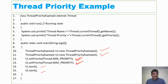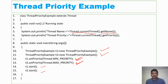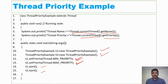Once threads have been started, the threads will call the run method. To get the name of the currently running thread, there is a method called getName(). If you want to get the priority, use currentThread().getPriority(). This method is used to get the priority number of the currently running thread.